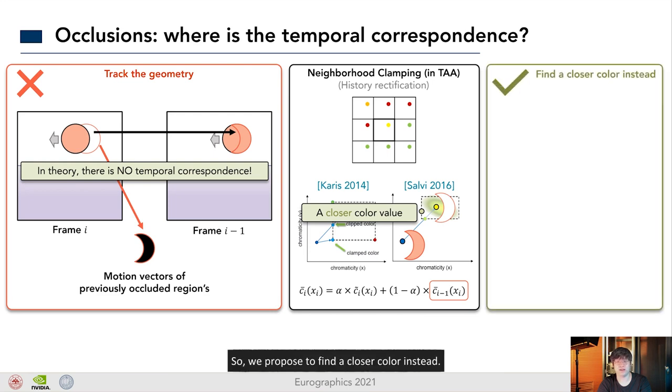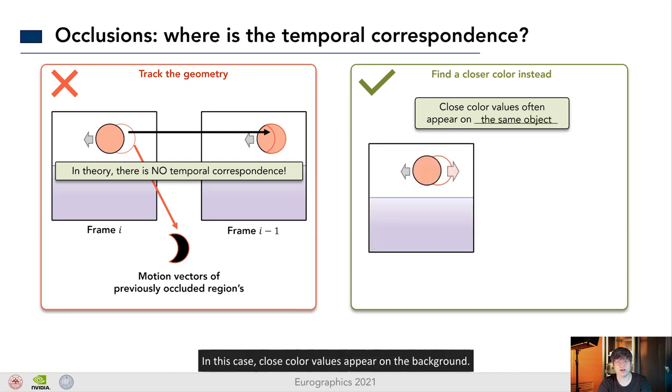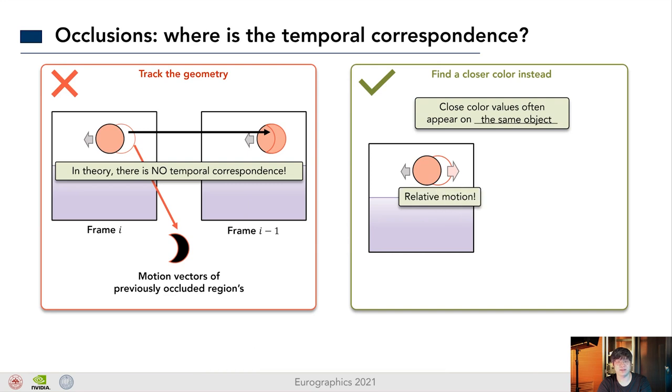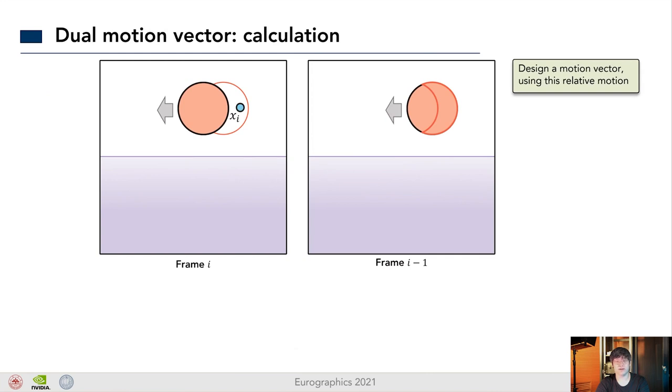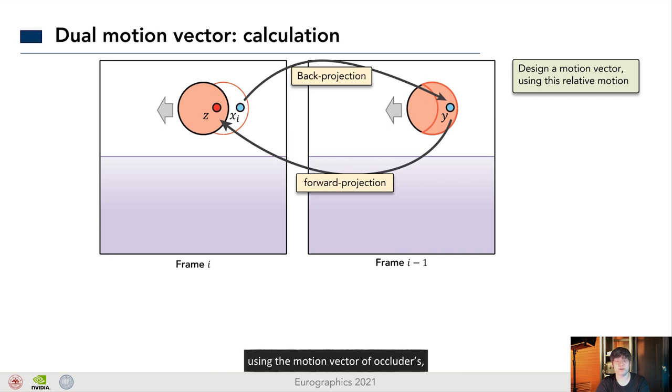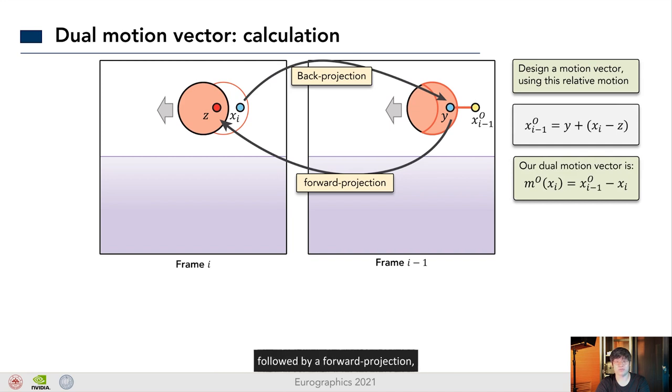We observe that the close color values often appear on the same object. In this case, close color values appear on the background. So, when the object moving to the left, we temporarily reuse the color values from the right side. This is a relative motion. So, inspired by Bolin et al., we are going to design a motion vector using this relative motion. For each pixel x sub i in the current frame, the traditional motion vectors used back projection gives the x sub i to y. We then continue to track the movement of y to z, using the motion vector of occluders. That is a forward projection. Then, based on the relative position of the x sub i and z, we can find the x sub i minus 1 in the previous frame. Since we have applied a back projection followed by a forward projection, essentially, using two motion vectors, we named our push-pull motion vectors.